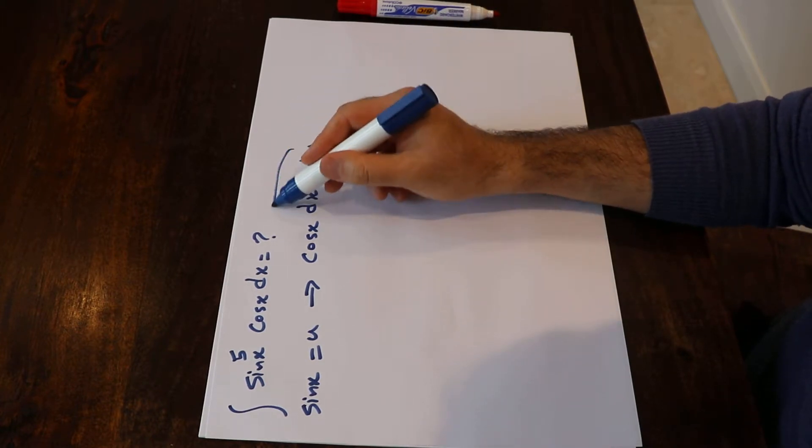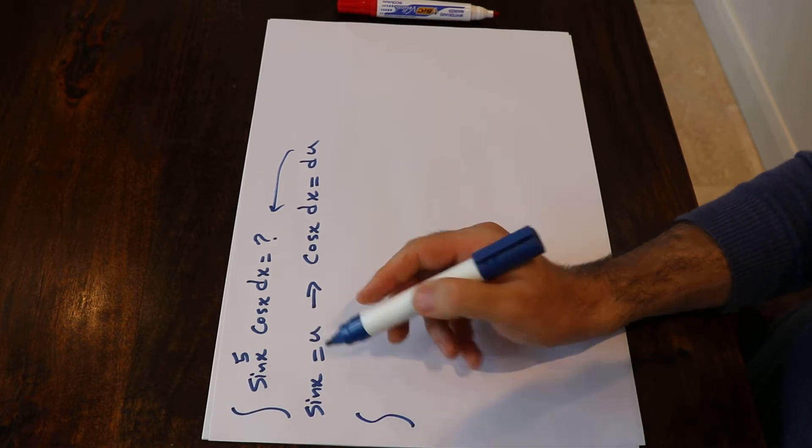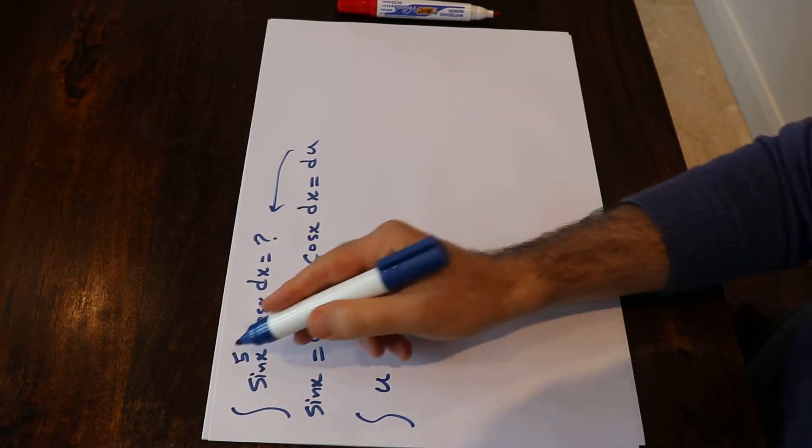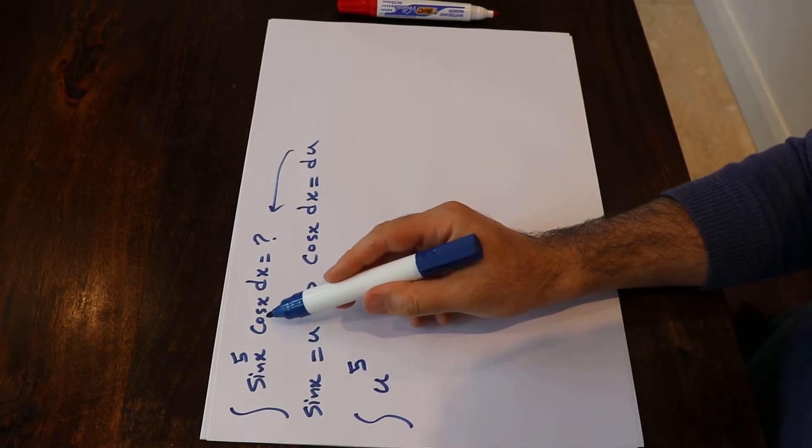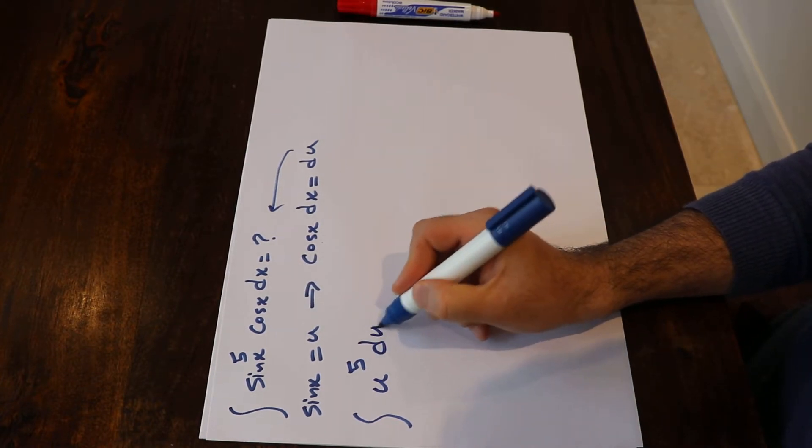So if you substitute this expression to this integral, you get instead of sine x, I write u to the power of 5, and instead of cosine x dx, I simply write du.